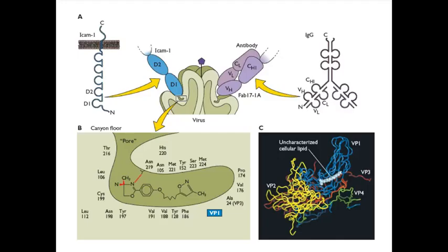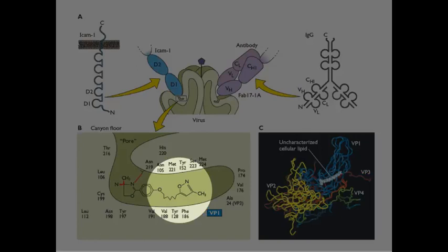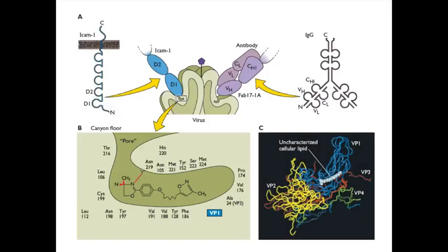And this is an example of such a compound bound in the pocket where the lipid would normally be. And this displaces the lipid, pushes the lipid out, and it binds with such high affinity that when this virus now sits on a cell receptor, it can't uncoat its RNA. So that's why it's an antiviral compound.